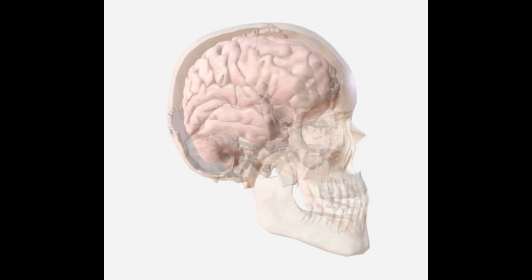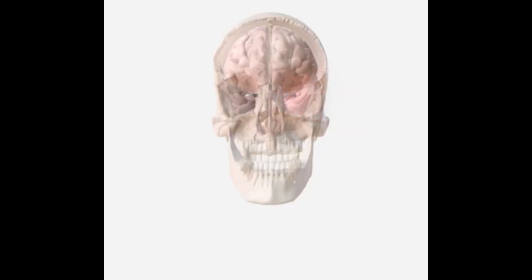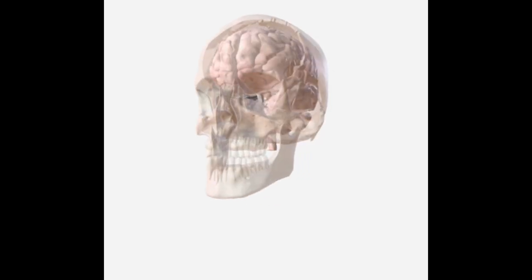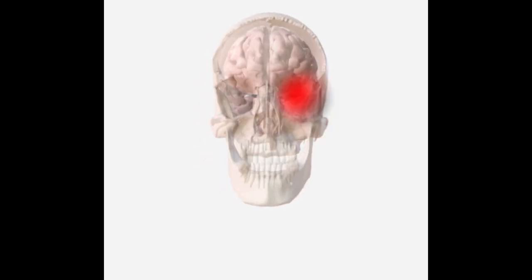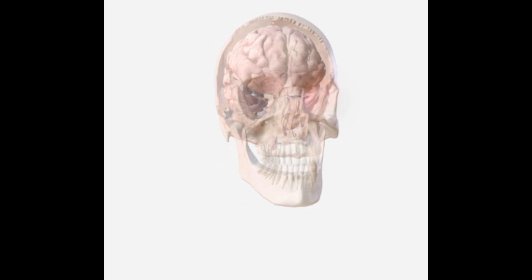Migraine pain is predominantly unilateral, although it can be bilateral in some patients. Its main localization is in the frontotemporal region, radiating to the periorbital and occipital area in certain cases.